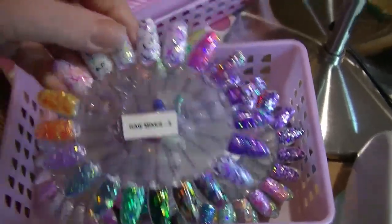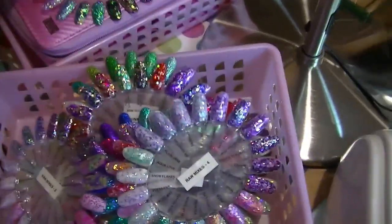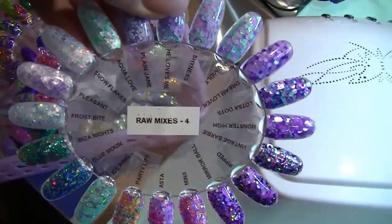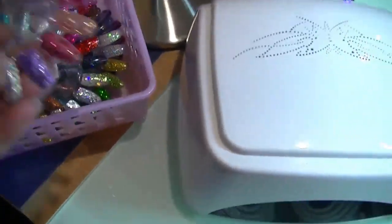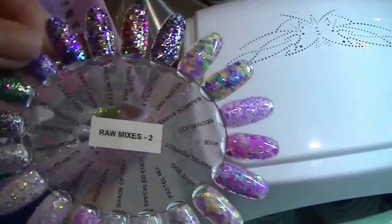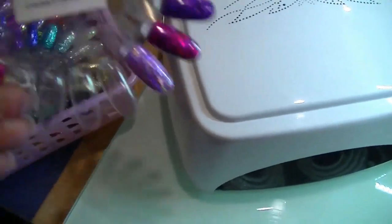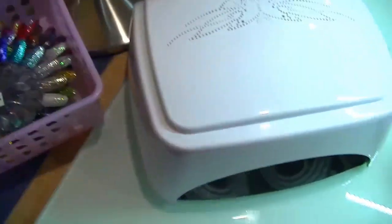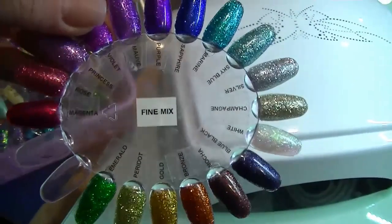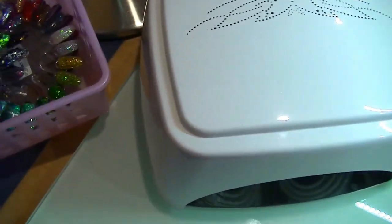These are my glitter swatches. I literally have three to four hundred different glitters. You can see a white label on each of the wheels. This helps me determine which drawer my glitter is in, and then each glitter is labeled on the swatch wheel as well as in the little pots that they're in. This just makes it easier for me to find the glitter that my client has chosen.